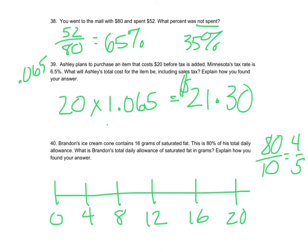Last problem. Brandon's ice cream cone contains 16 grams of saturated fat, and that's 80% of his total daily allowance. What is Brandon's total daily allowance? I said 80 over 100 equals 4/5. So right now they've had 4/5 of their daily allowance.